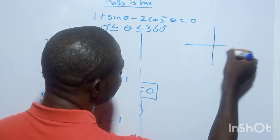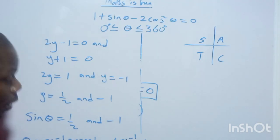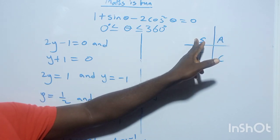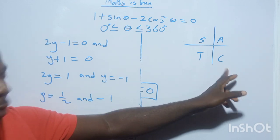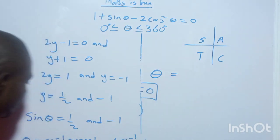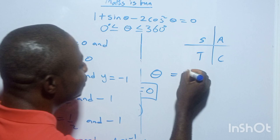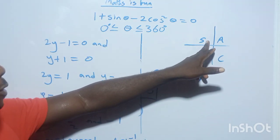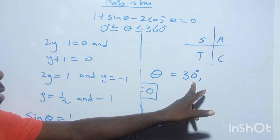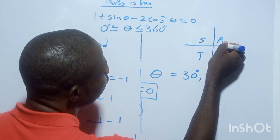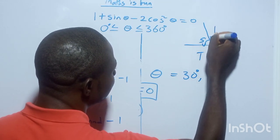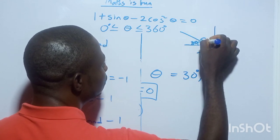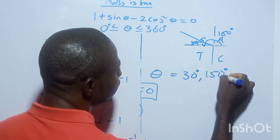Now if you recall the CAST chart: in the first quadrant all of sine, cosine, and tangent are positive; in the second quadrant only sine is positive; in the third quadrant only tangent is positive; in the fourth quadrant only cosine is positive. So the first value of θ: arcsin(0.5) = 30°. Moving to the second quadrant where sine is positive, 180° − 30° = 150°.